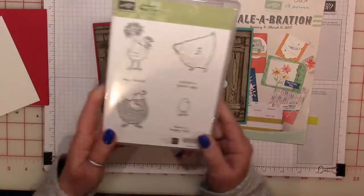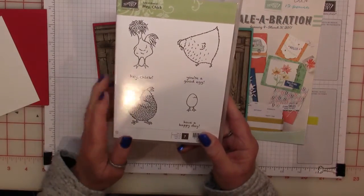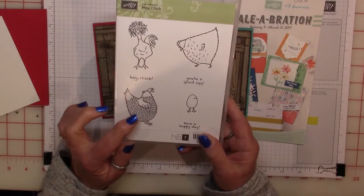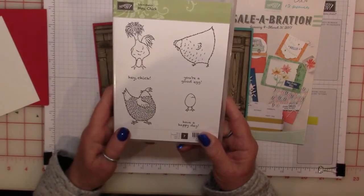This is a stamp set that you can earn for free during Sale-A-Bration. This is what the stamp set looks like. It's called Hey Chick, and you can't purchase this. You can only earn it. How fun is that, being able to earn something for free?